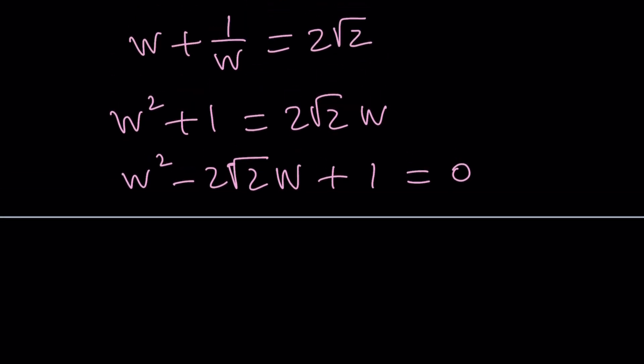Or you can complete the square if you want. No big deal. You're just going to have to add, I think, half of 2 root 2 squared. And that will be 2 to both sides. In other words, you just need to add 1 to both sides and then solve for it. But let's go ahead and use the quadratic formula anyways.